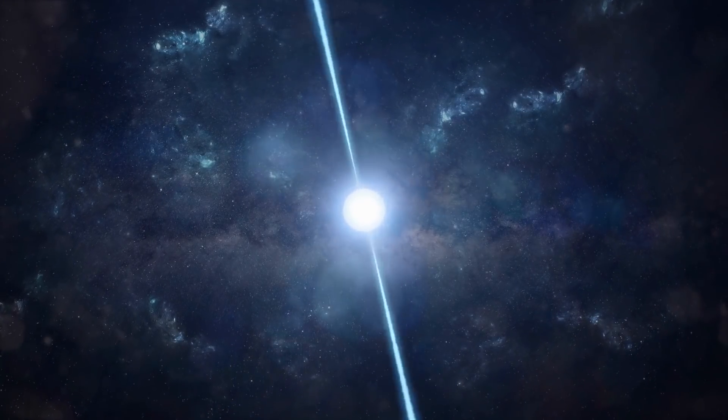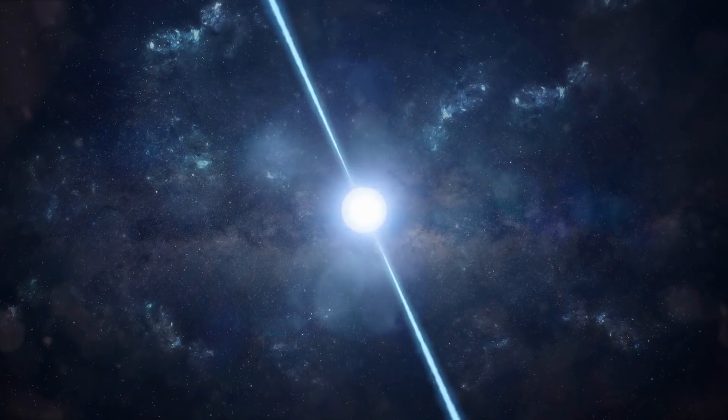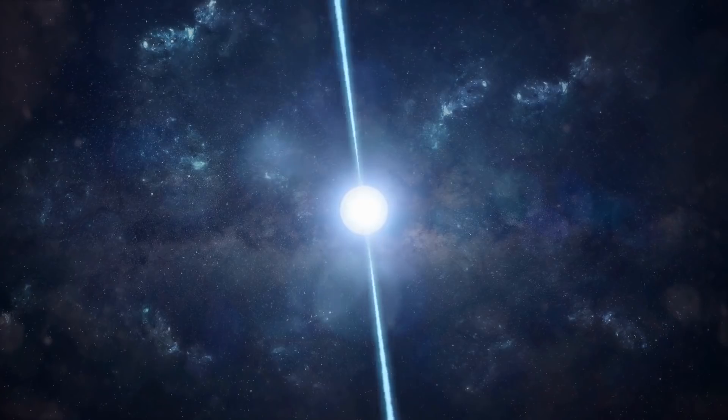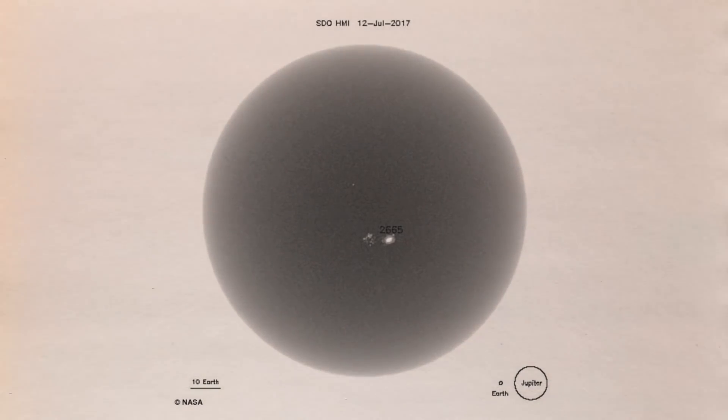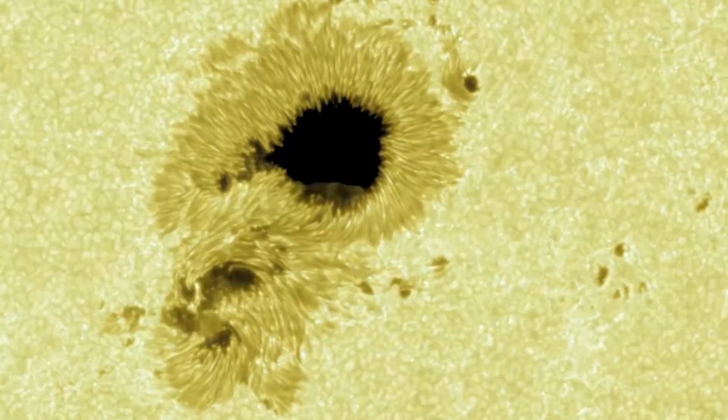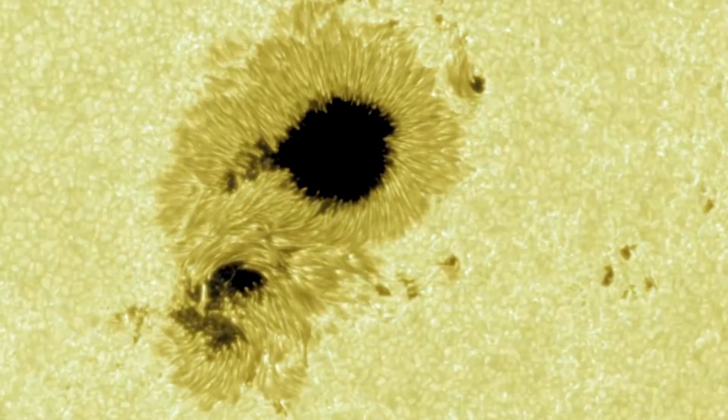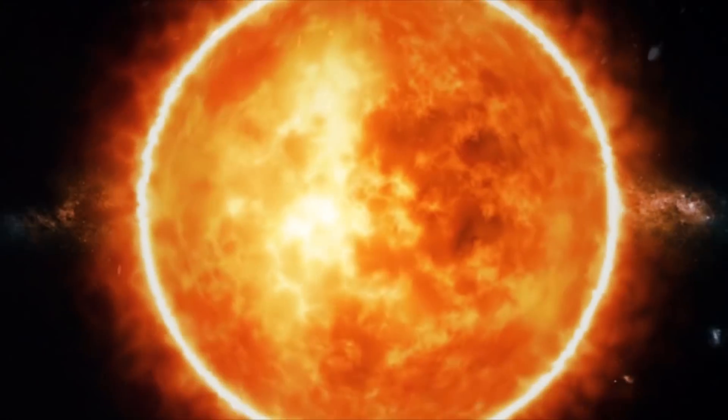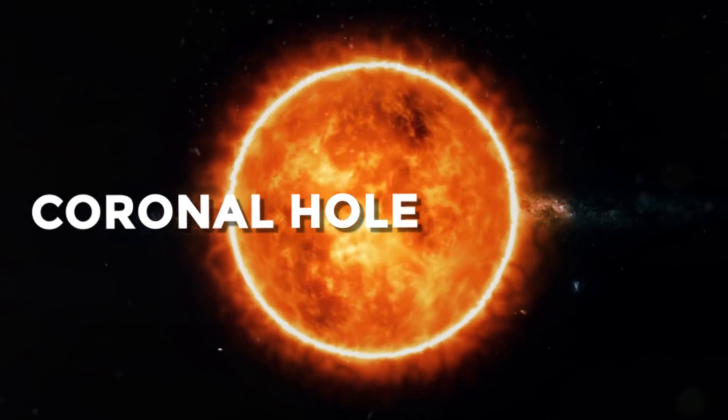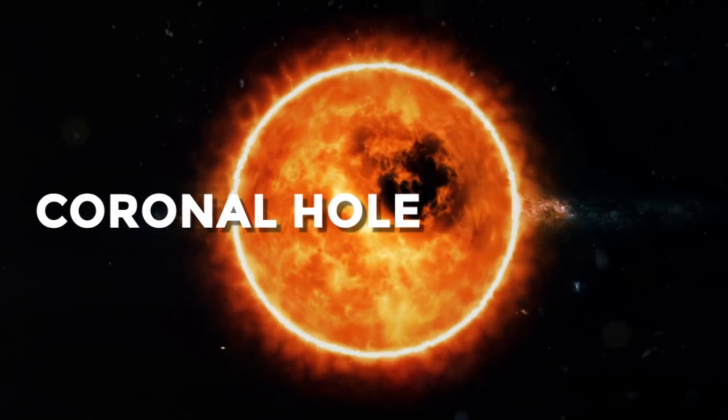NASA's Solar Dynamics Observatory captured this incredible image of the Sun's enormous surface hole while in orbit around the Sun. Observers have never seen anything like it, with a diameter almost 50 times that of the Earth at its widest point. It's called a coronal hole, an astronomical phenomenon that occurs on the Sun's corona.